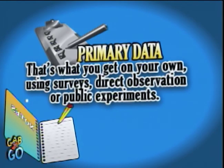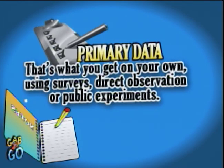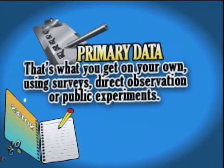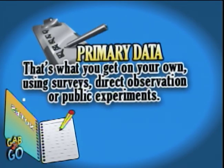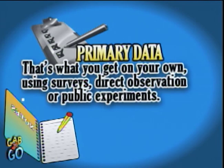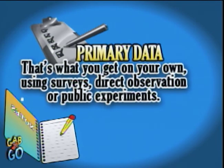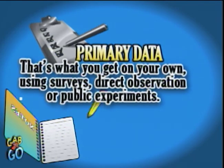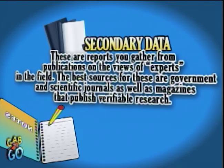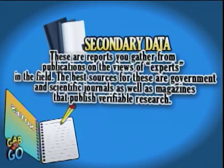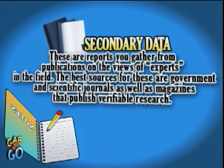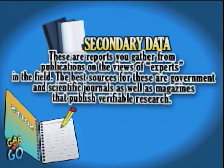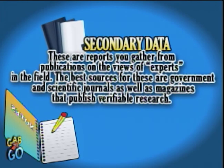Primary data — that's what you get on your own using surveys, direct observation, or public experiments. Secondary data are reports you gather from publications on the views of experts in the field.